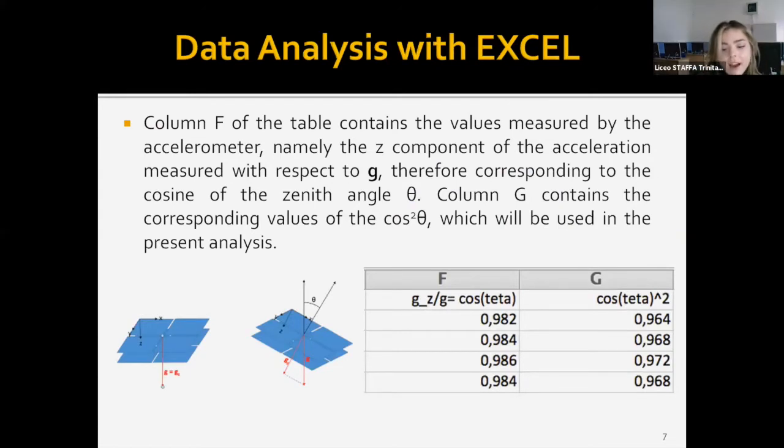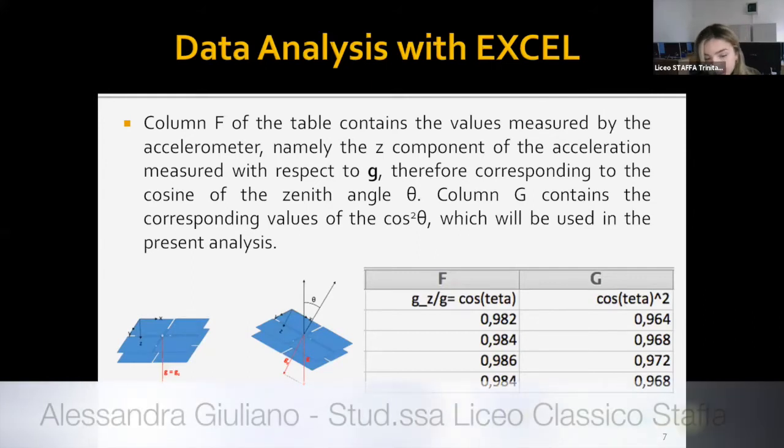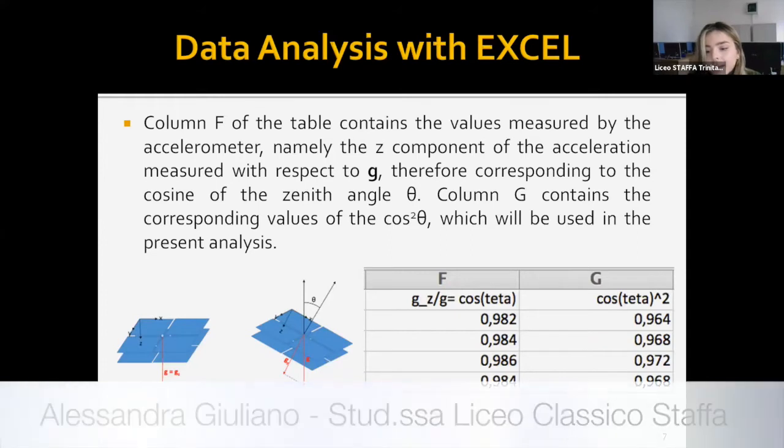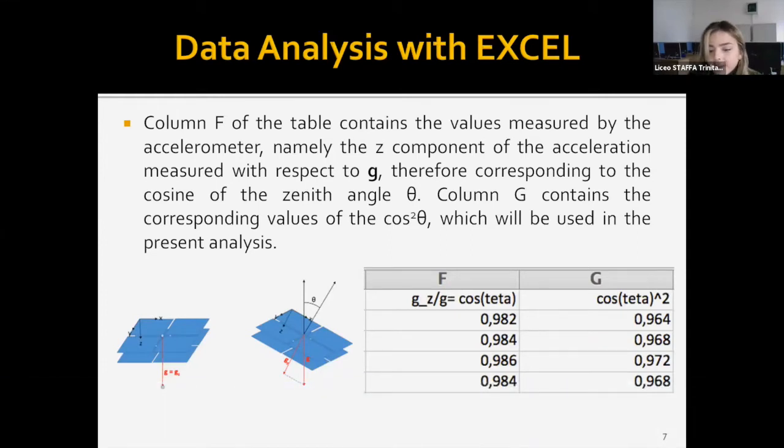So in this slide, this shows how to get to the column cos squared theta, which is necessary to correlate the rate with the cos itself. The column F contains the values measured by the accelerometer in terms of the z-component of the acceleration measured with respect to g, therefore corresponding to the cosine of the zenith angle theta. As you can see, when the detector plane is perfectly horizontal, the zenith angle theta is 0 and the component gz coincides with g. While when theta is larger than 0, gz will be equal to g times the cosine of theta. The angle theta is the angle between the detector perpendicular and the axis of the ship's tilt.